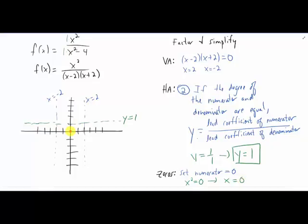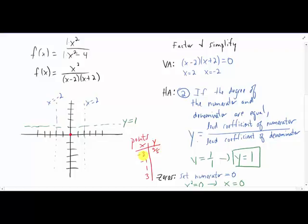We're going to need to plot a few points to figure out exactly what this thing is doing. I'm going to pick x equals negative three, x equals negative one, x equals one, and x equals three. If we plug in x equals negative three, we get y equals nine-fifths. If we plug in x equals negative one, we get y equals negative one-third. If we pick x equals positive one, we get y equals negative one-third. And if we pick x equals three, again we get nine-fifths.